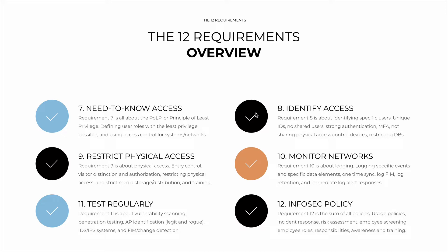The next three requirements are related: 'Need-to-Know Access,' 'Identify Access,' and 'Restrict Physical Access.' Requirement 7 is about digital protection, Requirement 8 is about digital identification, and Requirement 9 is about physical protection. Requirement 7, 'Need-to-Know Access,' defends the Principle of Least Privilege, or POLP — defining user roles with the least privilege possible to perform a task. If a person can do their job with less access, give them less access. If they don't need access to card data at all, cut it off. Access control systems represent this.